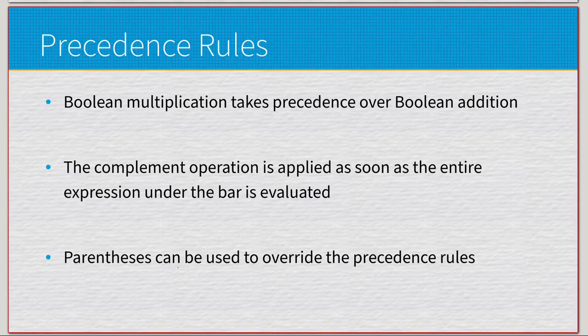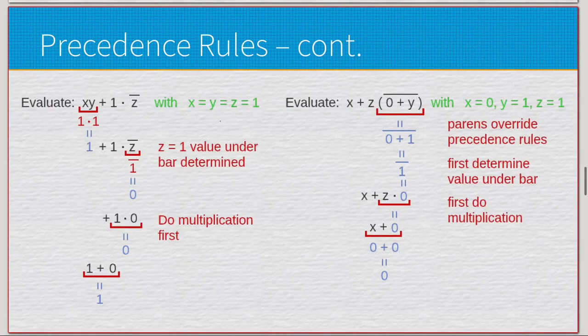Looking at precedence rules, we have x×y + 1×z̄, where x=y=z=1. Basically, all of our variables are one, which means we have 1×1=1. We have the complement of one, which will be zero. Then we have multiplication here, so we do 1×0, which equals zero. Finally, 1+0 with addition, leaving us with a one. On the right side, we have x + z×(0̄ + y).